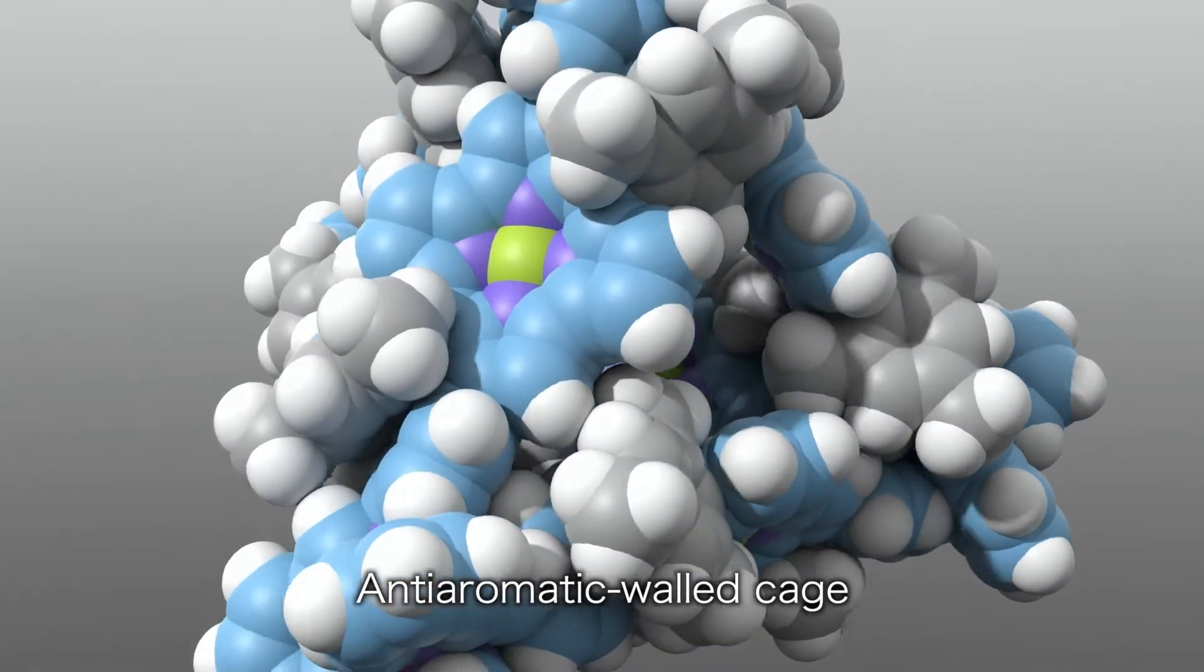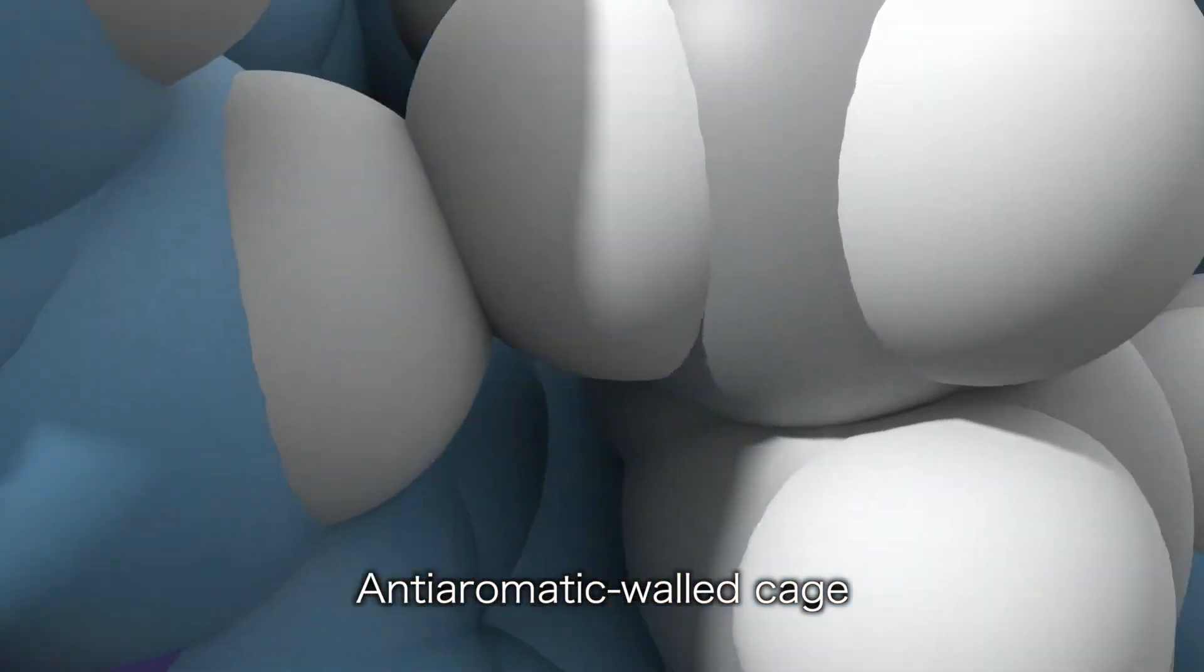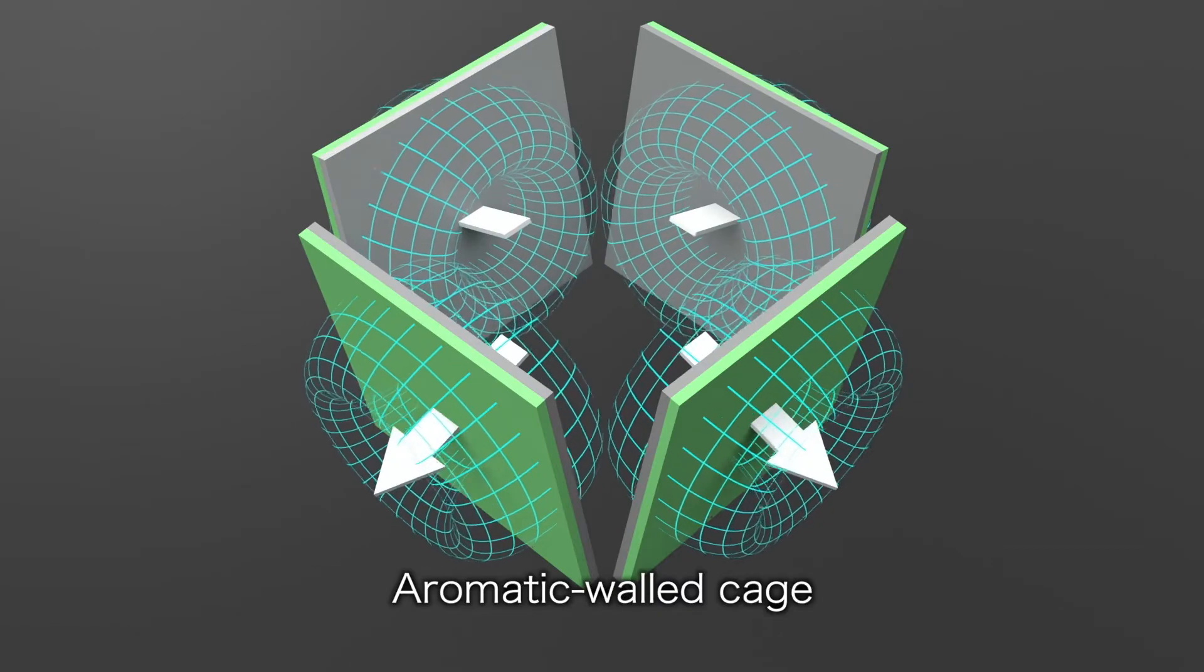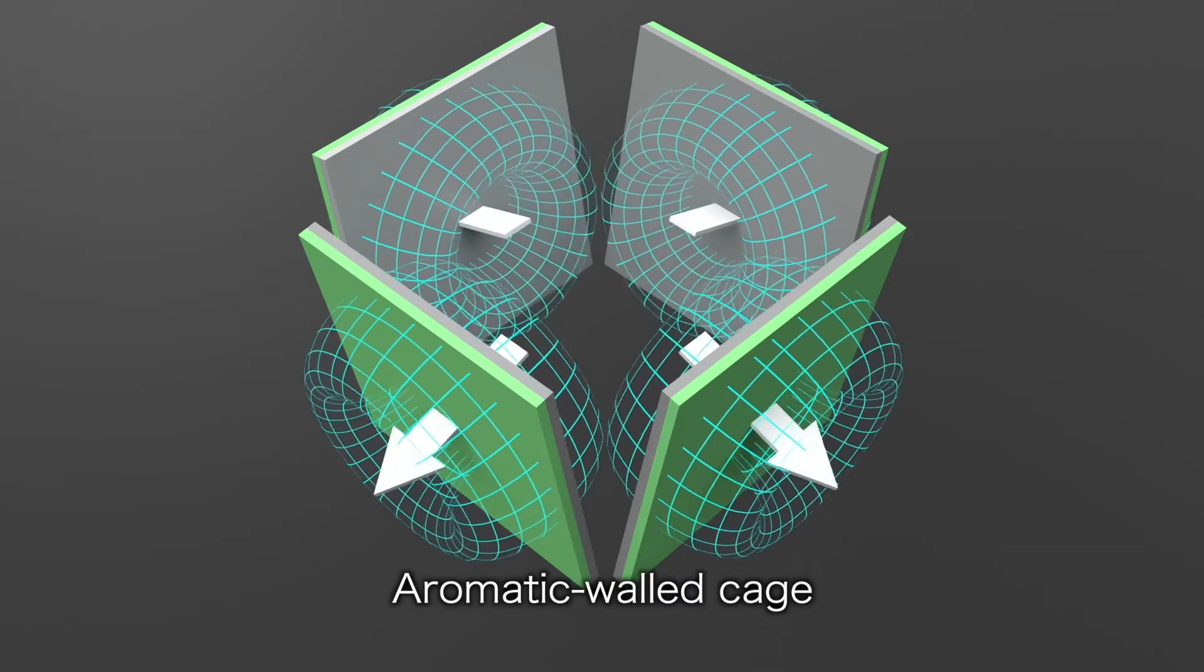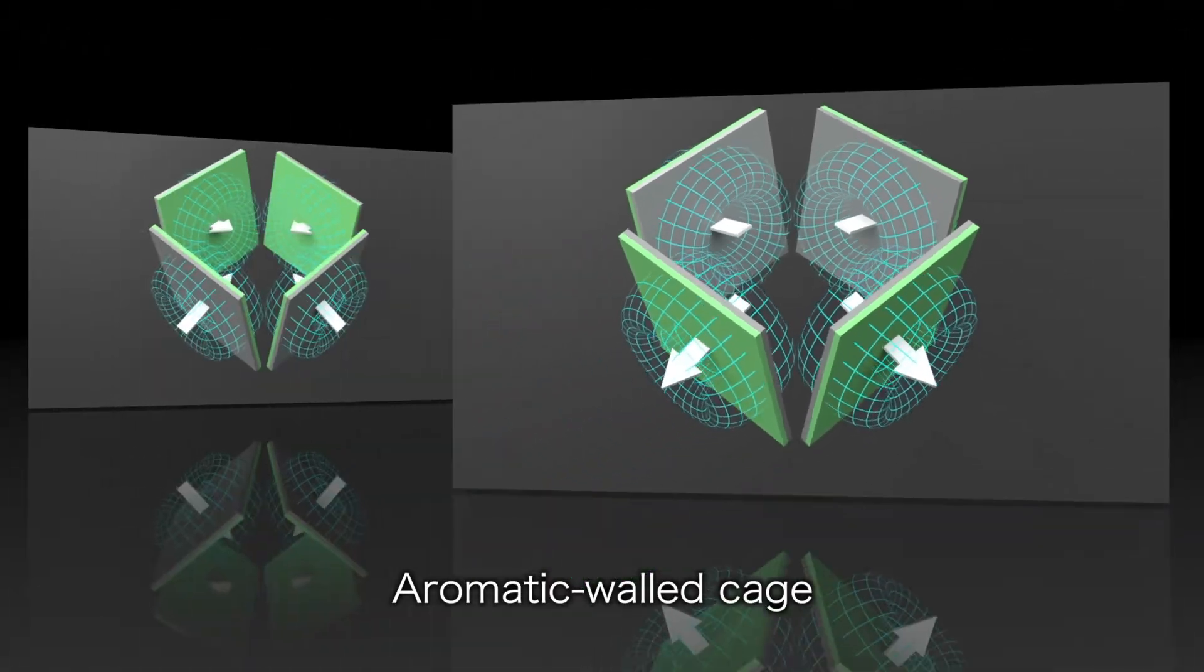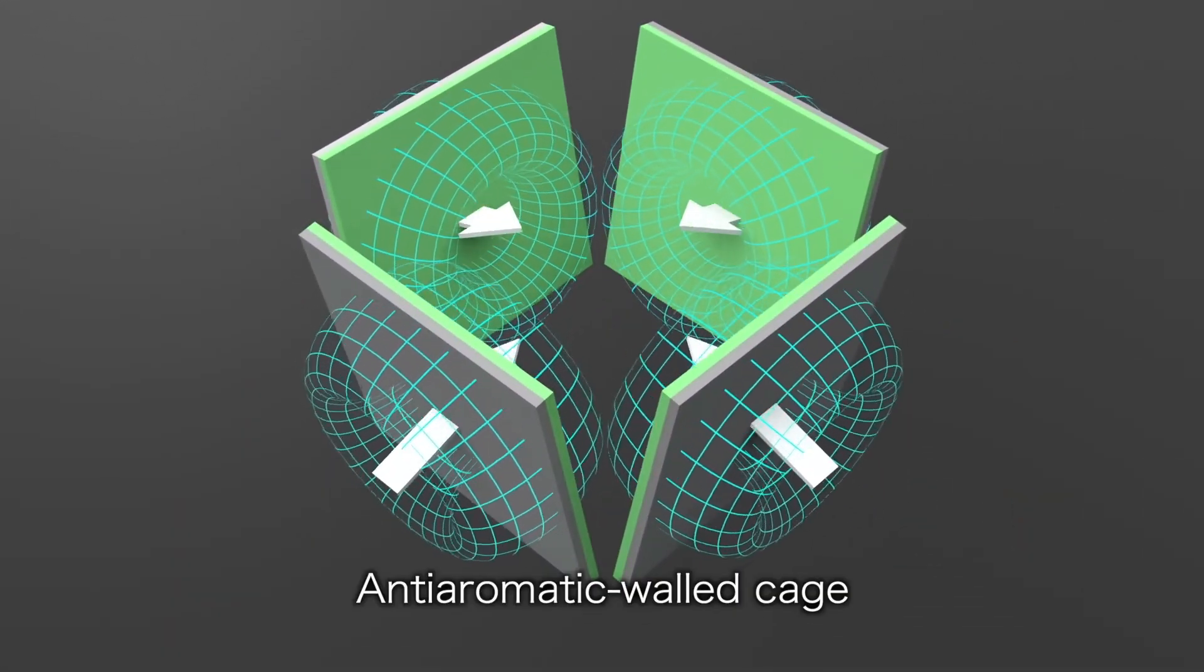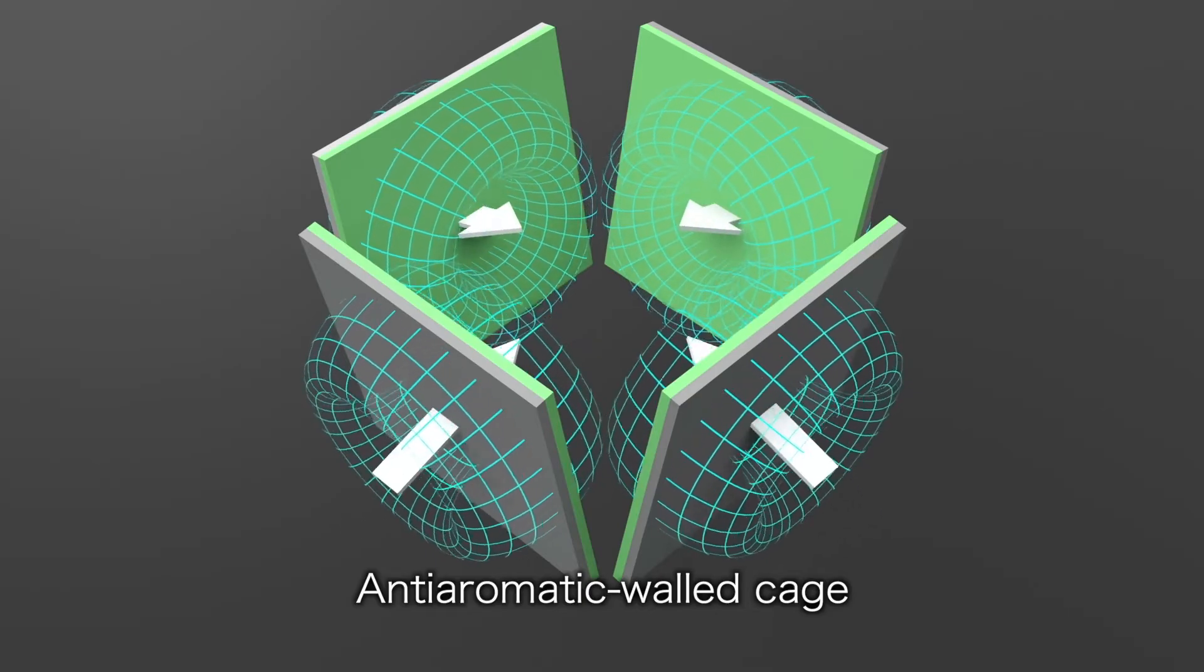The researchers were interested in the magnetically unique environment inside the nanocage. Compared to having aromatic walls, anti-aromatic walls had been predicted to enhance the opposite magnetic field inside the nanospace. But this had never been experimentally shown until now.